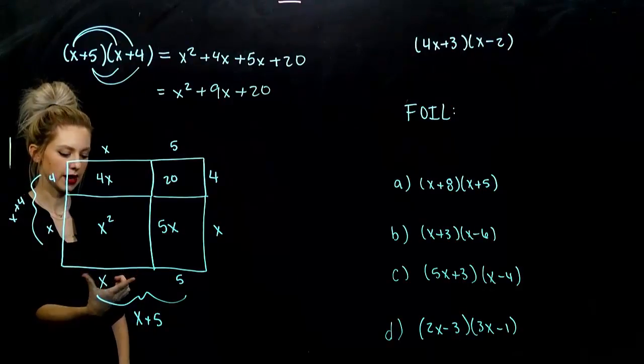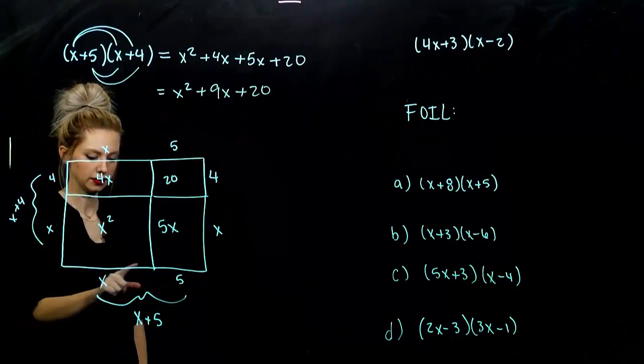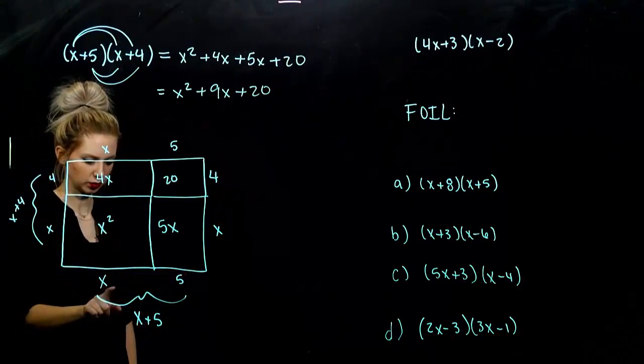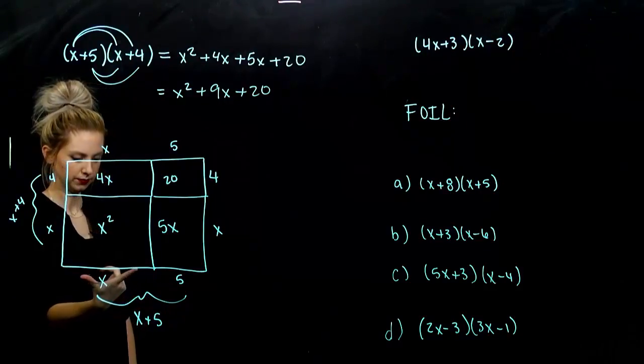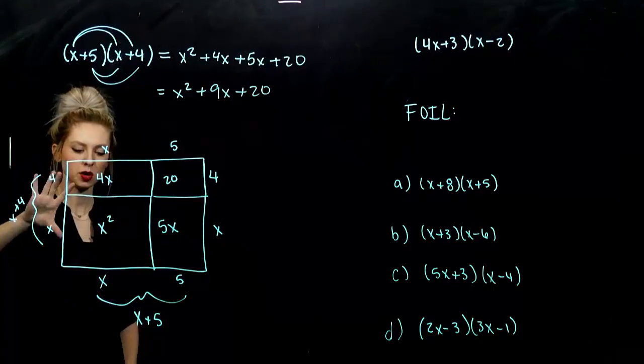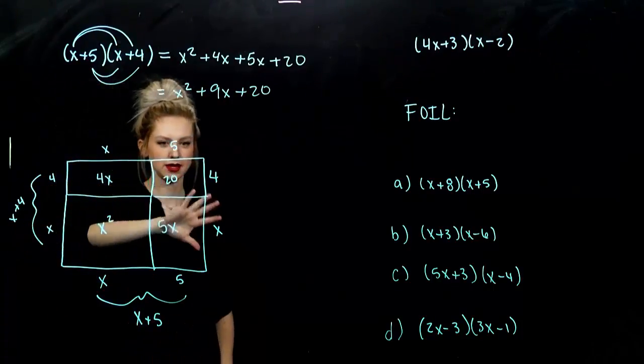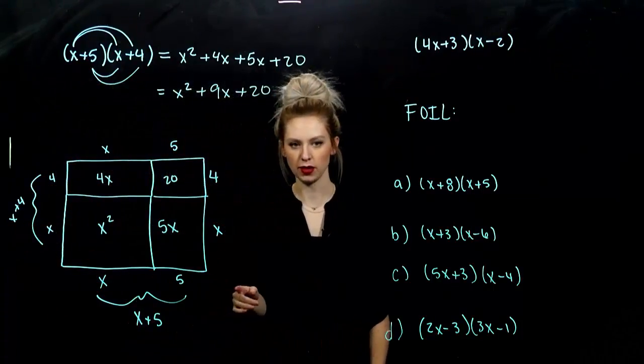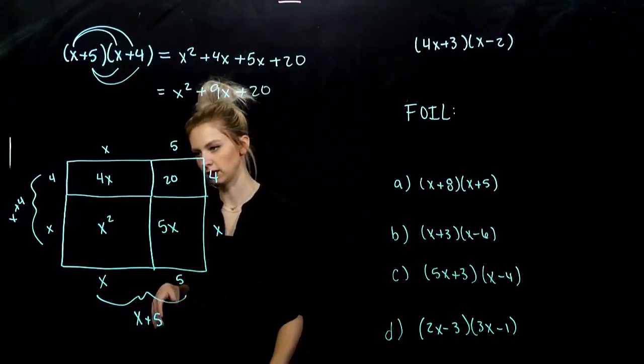Down below, we have this entire line has length x plus 5. x is coming from here, 5 is coming from there.